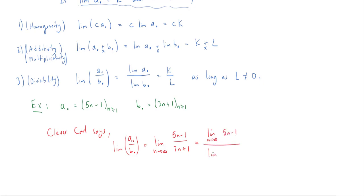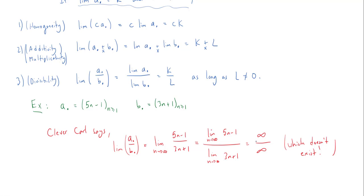Carl gets the limit as n goes to infinity of 5n minus 1 over the limit as n goes to infinity of 3n plus 1. The limit on top is infinity, since 5n minus 1 diverges, and on the bottom 3n plus 1 also diverges to infinity. So this gives infinity over infinity, which does not exist. Carl is proud because he used to think infinity over infinity equals 1, but now knows it doesn't.